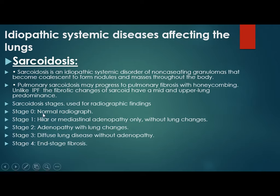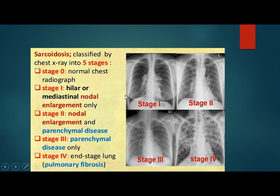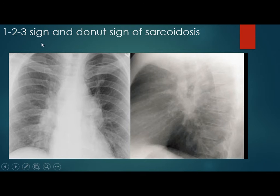Another disease causing diffuse lung disease is idiopathic systemic disease like sarcoidosis. Sarcoidosis is an idiopathic systemic disorder of non-caseating granulomas that become coalescent to form nodules and masses throughout the body. Pulmonary sarcoidosis may progress to fibrosis and honeycombing, but unlike idiopathic pulmonary fibrosis, the change may be in the mid and upper lung predominance. Stages: Stage 0 — normal chest radiograph; Stage 1 — bilateral hilar lymphadenopathy; Stage 2 — hilar enlargement and parenchymal disease; Stage 3 — parenchymal disease only; Stage 4 — fibrotic change.